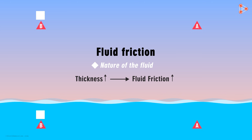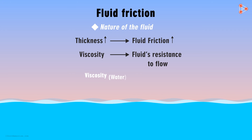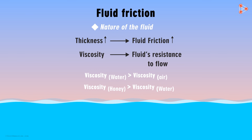There's a term which describes a fluid's resistance to flow — it's called viscosity. Water is more viscous than air; higher the viscosity, more will be the resistance offered by that fluid. Honey is more viscous than water, which is why it offers more friction than water. That was the first factor affecting fluid friction: the nature of the fluid.